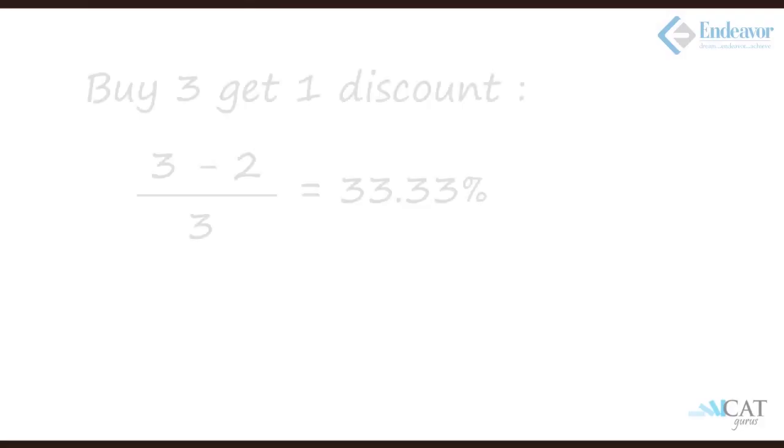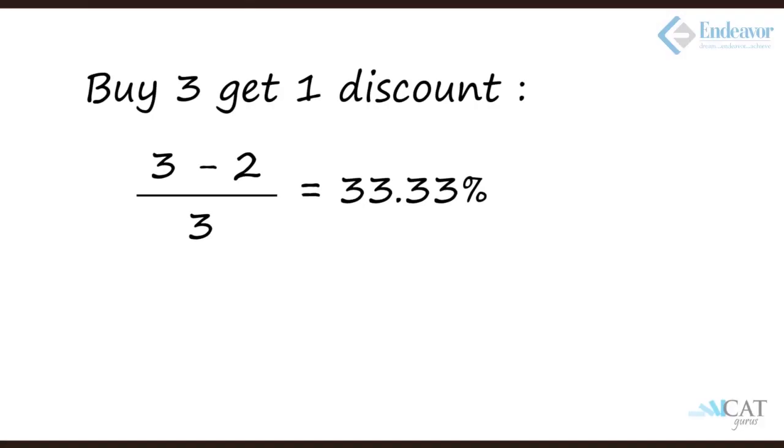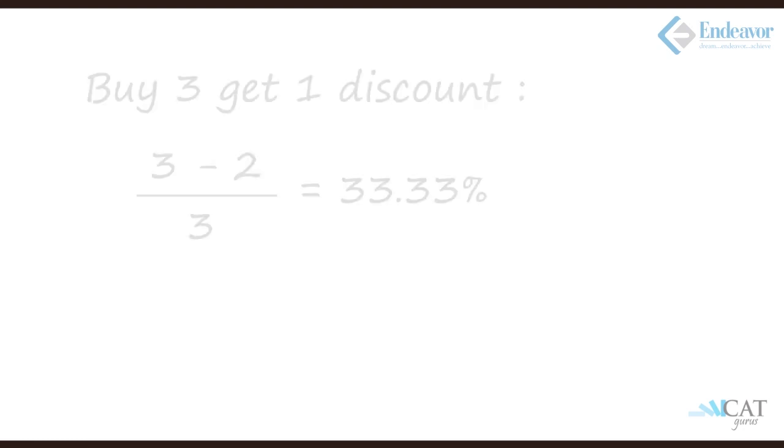When we buy 3, how much do we pay for? With 'buy 3 get 1 free', out of 3, we get 1 free, so we actually pay for 2. So the discount is (3-2)/3 = 1/3. One is free when you buy 3, so the discount is 33.33%. Let's take another case where it's a play on words: 'buy 3 take 1 free'.